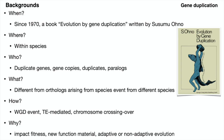Gene duplication is a common phenomenon throughout the eukaryotic tree of life since the book named Evolution by Gene Duplication, written by Ohno in 1970. Since then, researchers have been zooming in to look at the details of how, why, and what of gene duplication events.